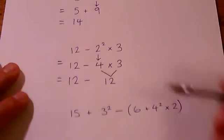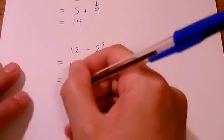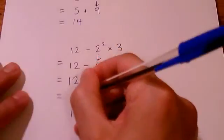OK. So, we've done the power first. Then, we've done multiplication. Now, we're going to do that subtraction to make 0.